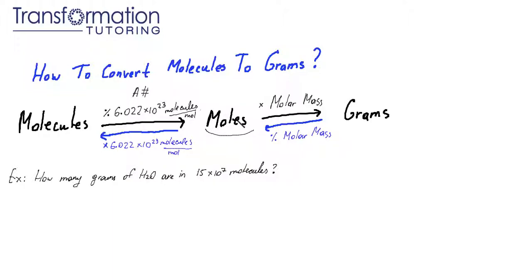And in order to go from moles to grams, we will multiply the number of moles by the molar mass, which is found from the periodic table, and we can easily get grams.